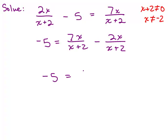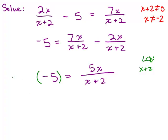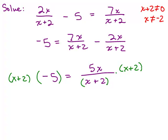After subtracting, I get negative 5 equals. Now with a common denominator, I subtract the numerators, giving 5x over (x+2). At this point, we multiply both sides by the least common denominator, which is (x+2). So I multiply both sides of the equation by (x+2).